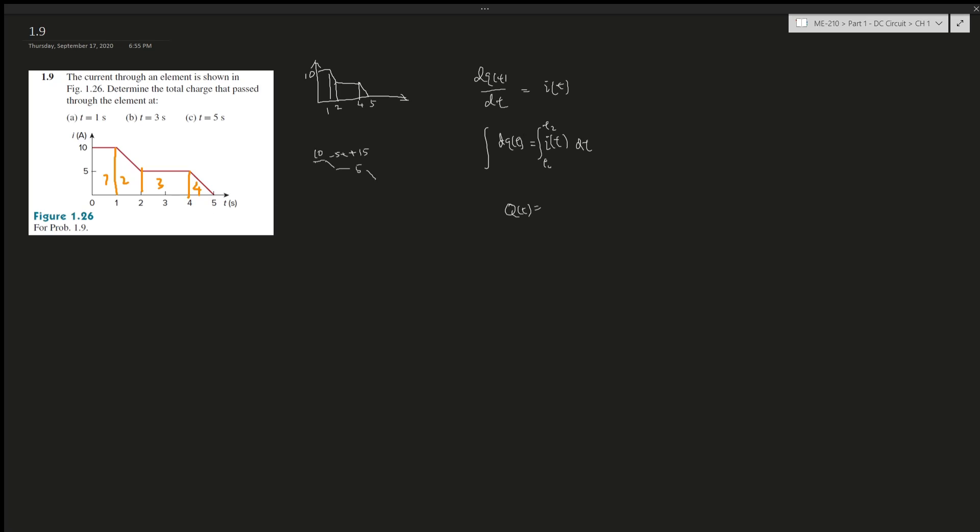At 1 second, which is area 1 - what is that? The height is 10, the length is 1: 10 times 1, done. That is 10 coulombs. For part B at 3 seconds, we need to do a little extra work.